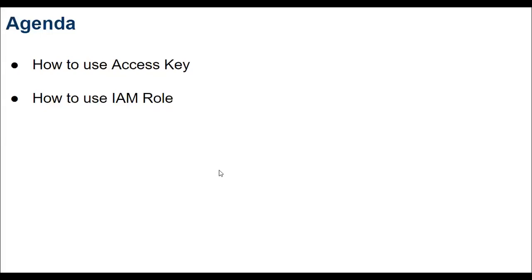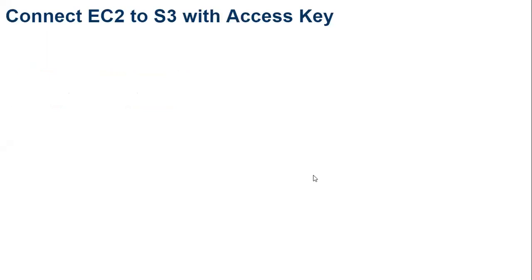In today's video we are going to look at what is an access key and how to practically use it, and what is an IAM role and how to practically implement it. We are going to see how to connect your EC2 instance to access S3 using the access key.